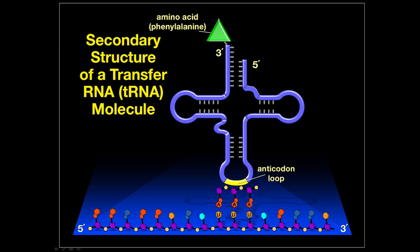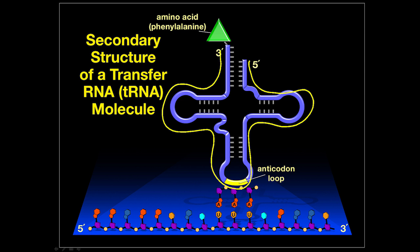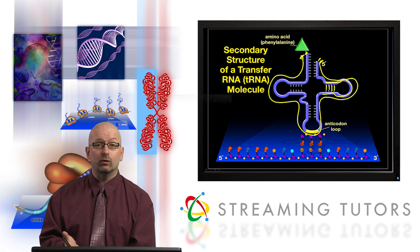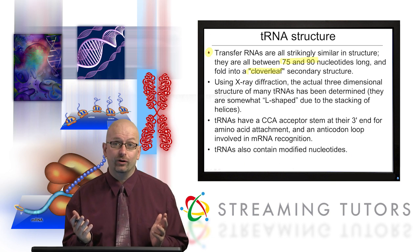The cloverleaf has three loops — like a three-leafed clover — with four stems. This is one piece of RNA folding back on itself extensively, creating hairpin loops. Here's the five-prime end and the three-prime end. Every tRNA has this same general folding pattern, so in that sense they're all very similar. X-ray diffraction has been used to determine the exact three-dimensional structure of several transfer RNAs — they are somewhat L-shaped, where the helices get stacked.